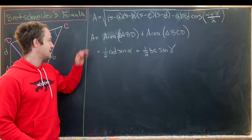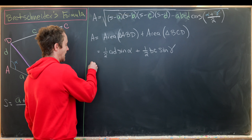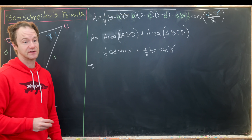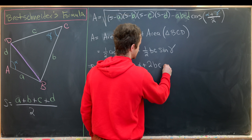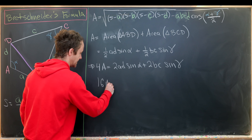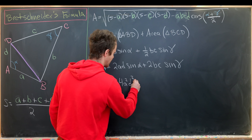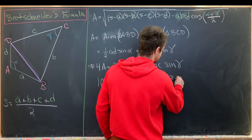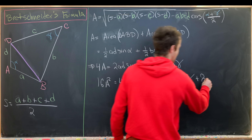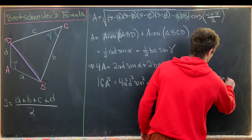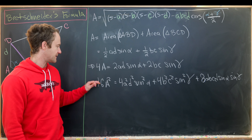Now we'll take this expression, multiply it by 4 and then square the whole thing — this avoids working with fractions throughout. Four times the area gives 2ad·sin(alpha) + 2bc·sin(gamma). Squaring gives 16A² = 4a²d²·sin²(alpha) + 4b²c²·sin²(gamma) + 8abcd·sin(alpha)·sin(gamma), where the cross term has coefficient 8 from 2 times 2, times two copies.